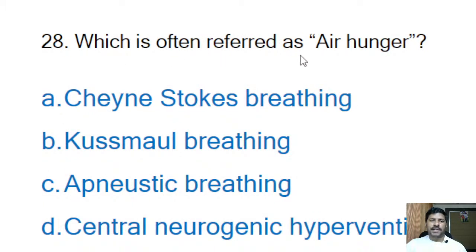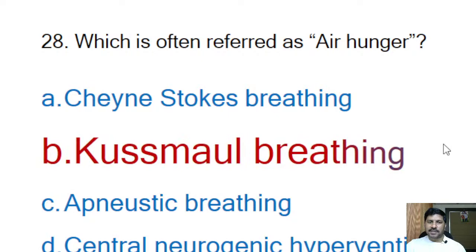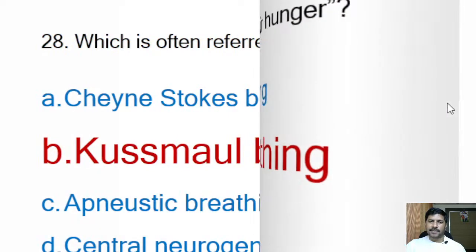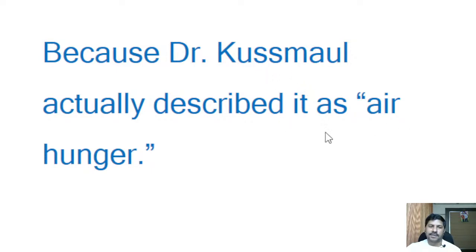Twenty-eighth question: which is often referred to as air hunger — Cheyne-Stokes breathing, Kussmaul breathing, apneustic breathing, or central neurogenic hyperventilation? Correct answer is Kussmaul breathing. Kussmaul breathing is also known as air hunger because Dr. Kussmaul initially described it as air hunger. Later it became known as Kussmaul breathing.